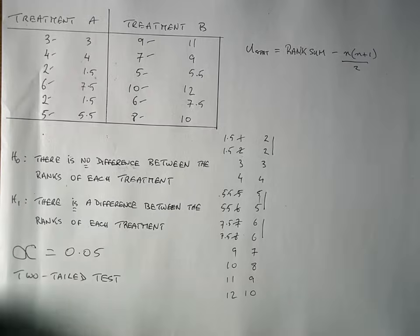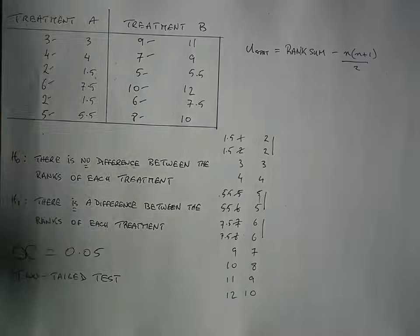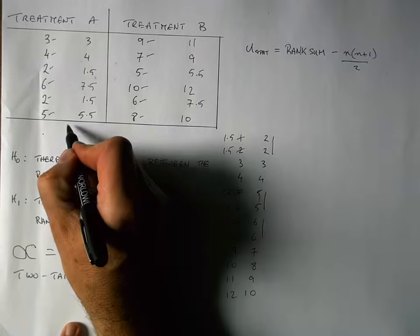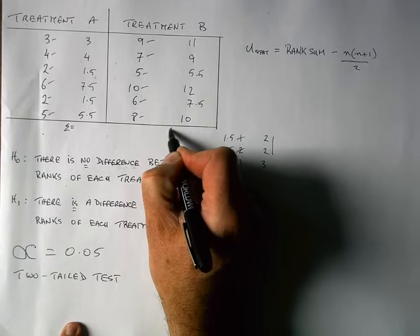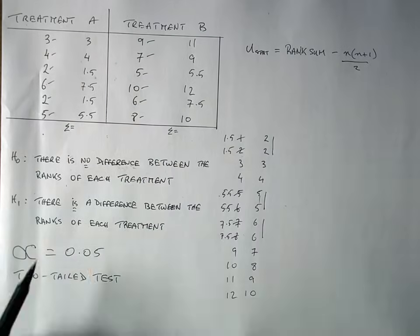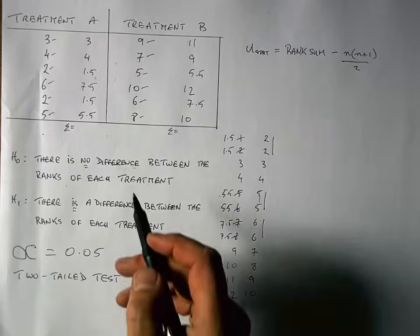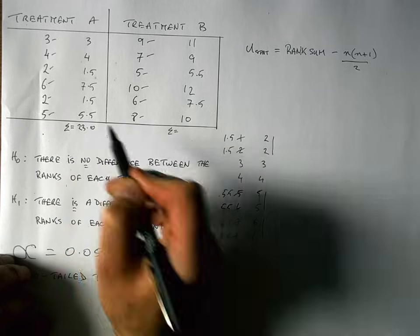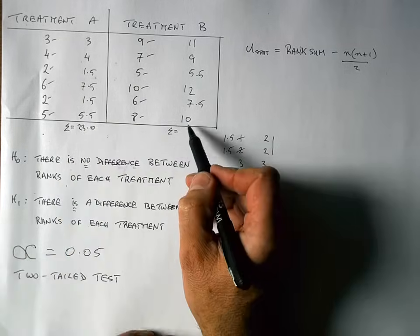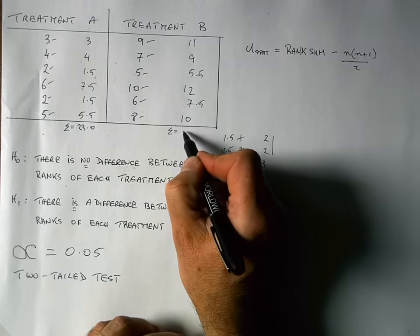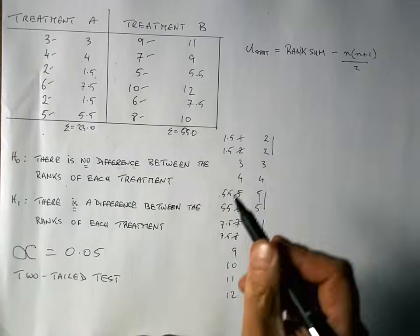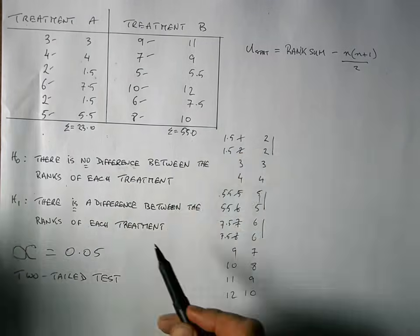Now that we have all the rankings, our next job is to sum all of these ranks to get the rank sum for each group. Adding up all the values for treatment A, I get a value of 23.0. Adding up all the values for treatment B, I get a value of 55.0. So these are my rank sums for each of the two treatments.